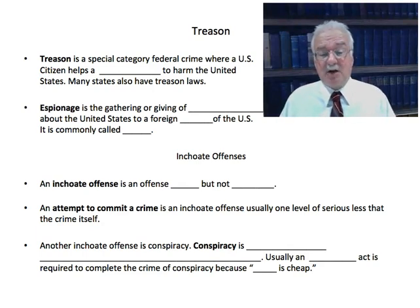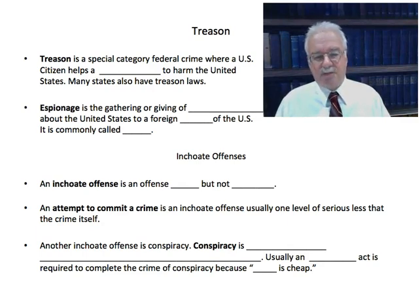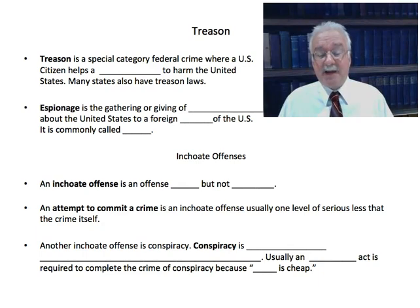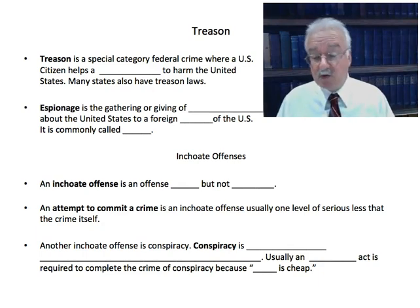Treason is a special category of federal crime where a U.S. citizen helps a foreign enemy to harm the United States. Many states also have treason laws, though we don't get too many of these prosecutions. Espionage, related to treason, is the gathering of national defense information about the United States to a foreign power or enemy — also called spying. Not too many of these cases; almost always handled by federal authorities, the FBI.